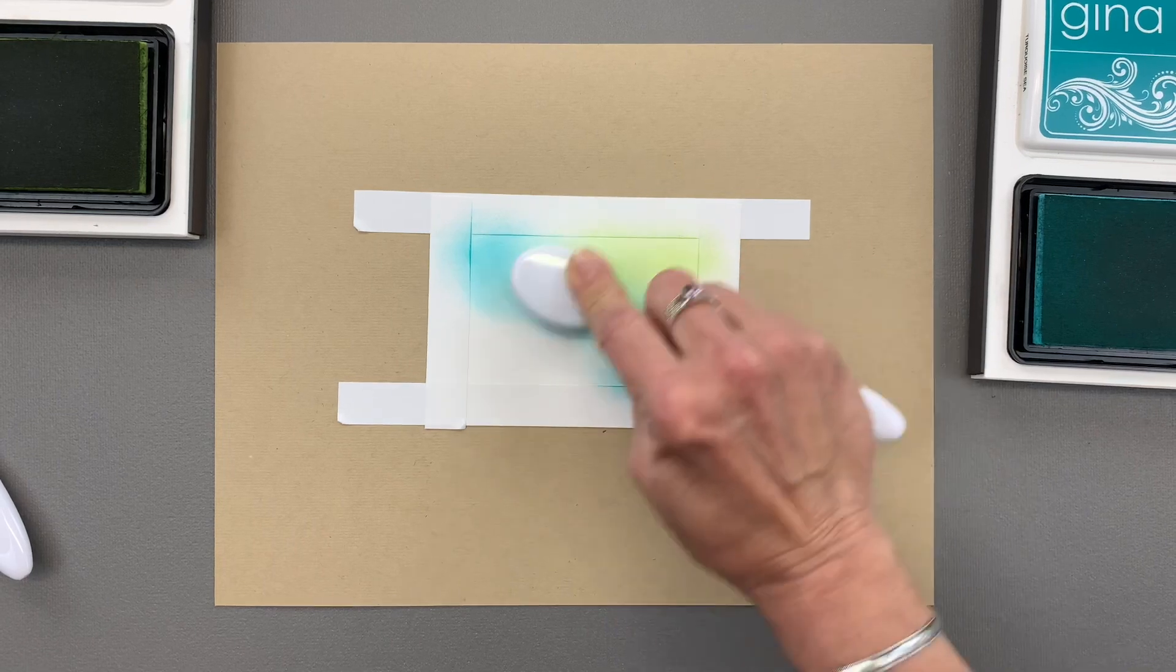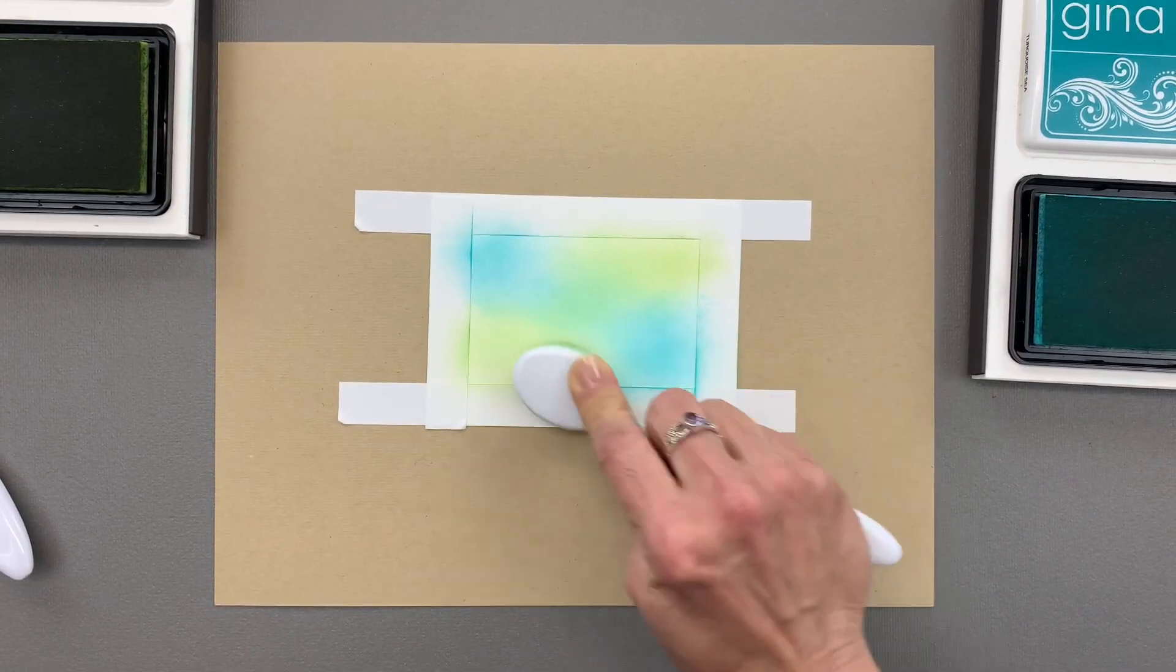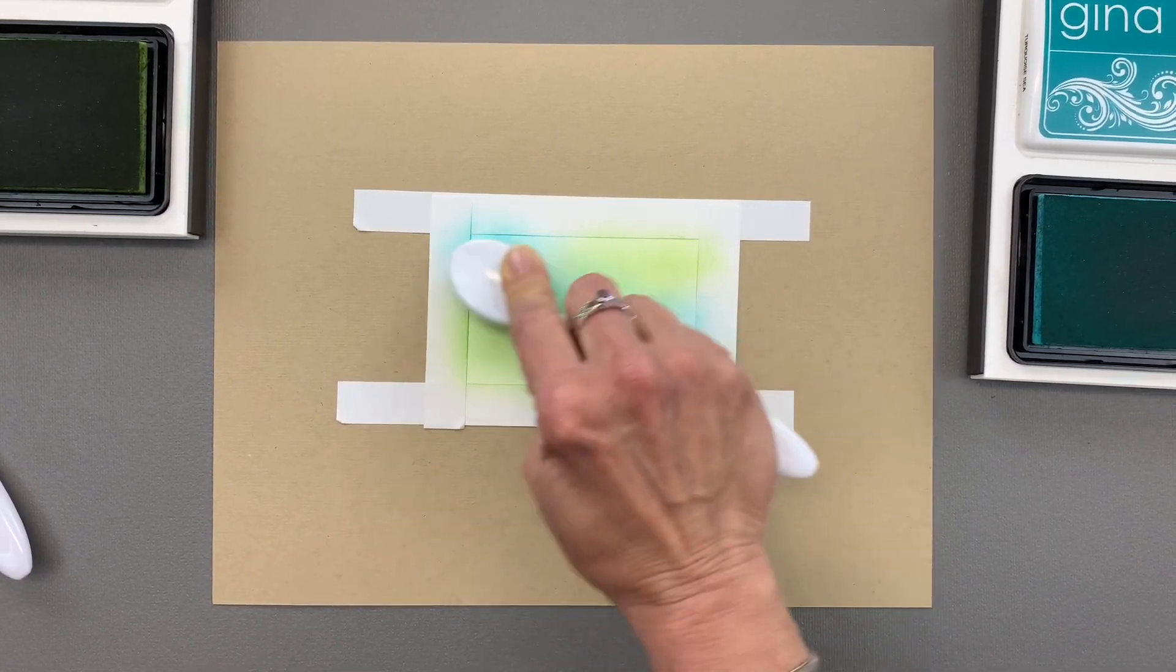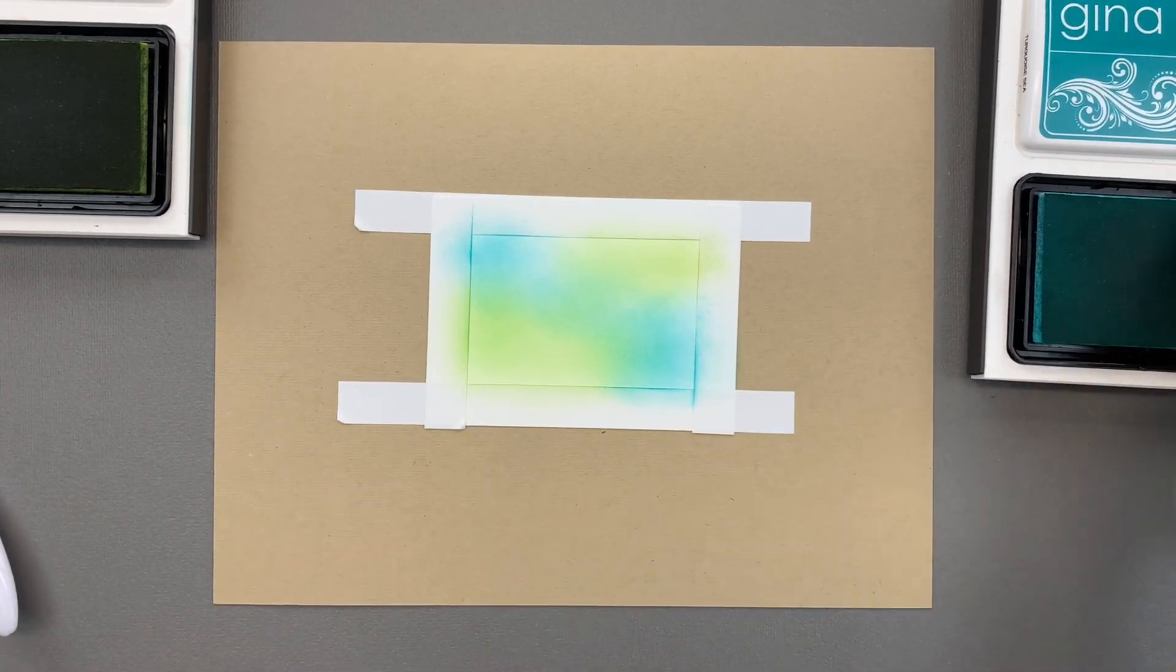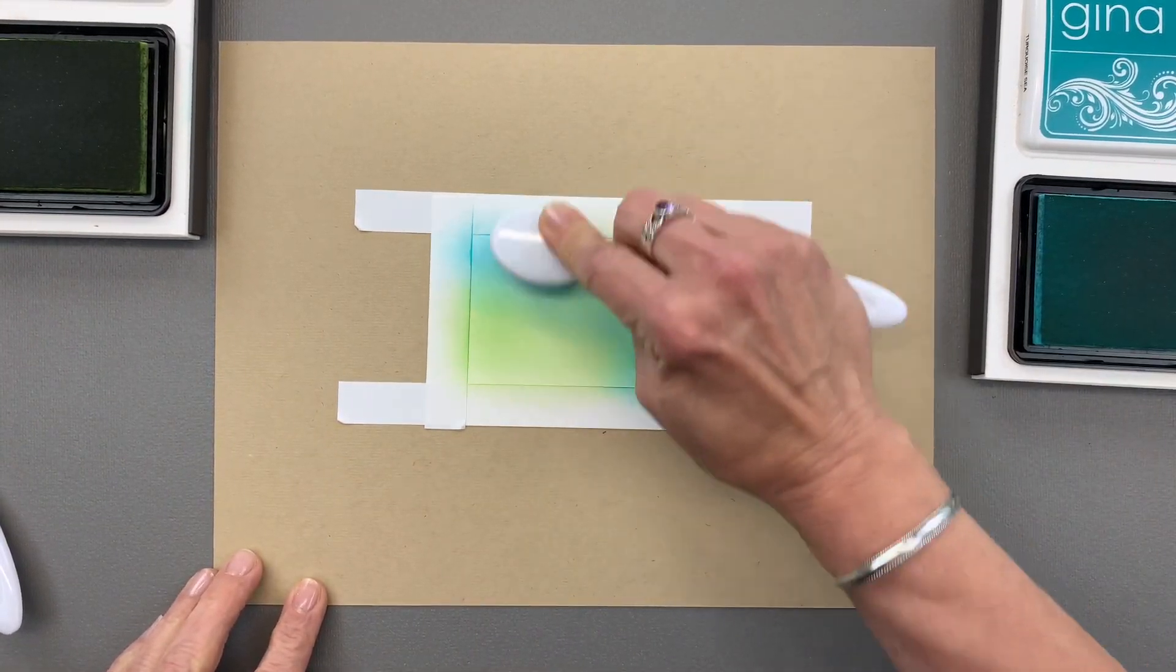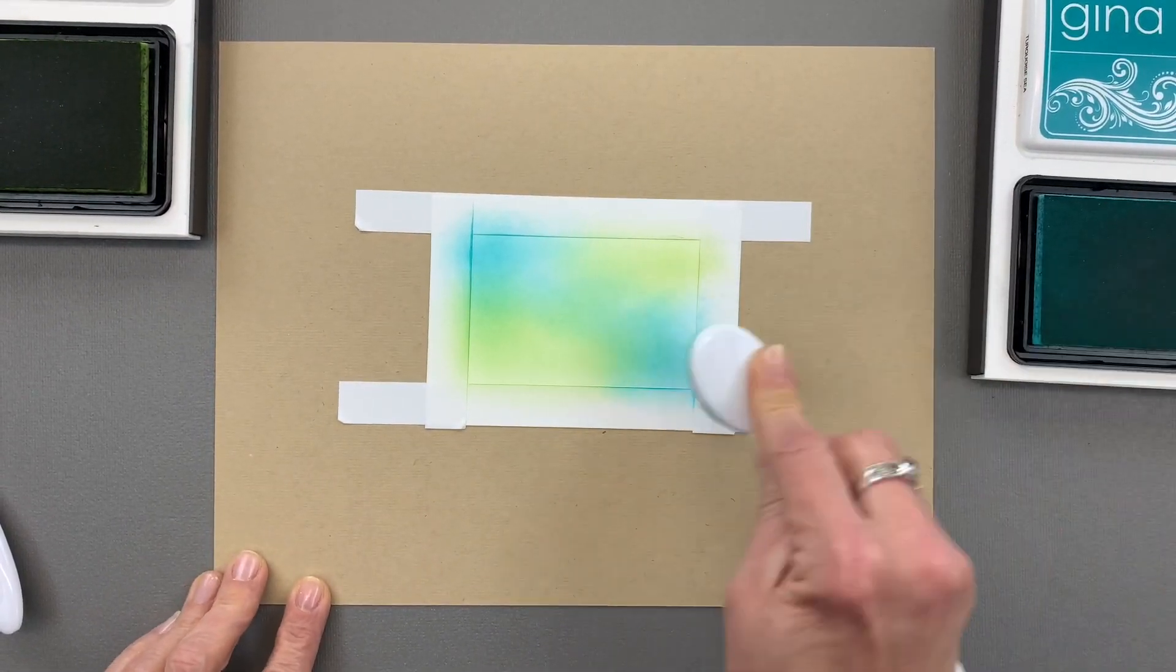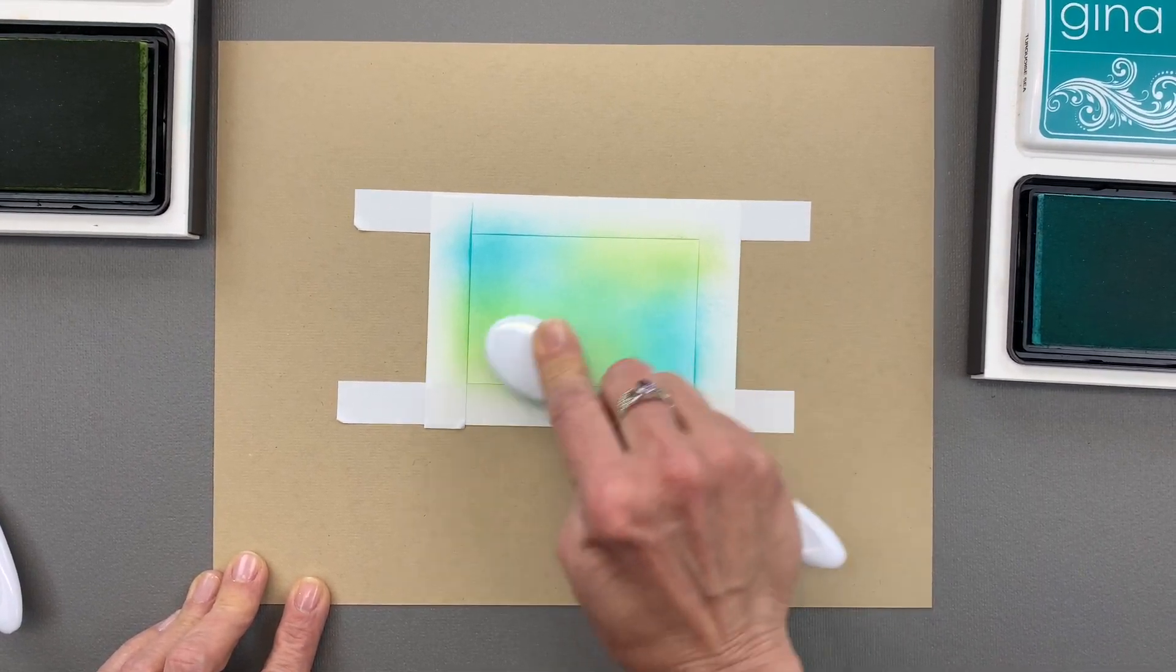Now if you don't have Jelly Bean Green you can use a color like Lucky Clover, Grass Green, or any color combination you want. I want to make sure I go over that Turquoise a little bit just to blend the blue and the green together, and if you want to go back and add some more color to make it a little more vibrant you can blend it until you feel comfortable with your blend.